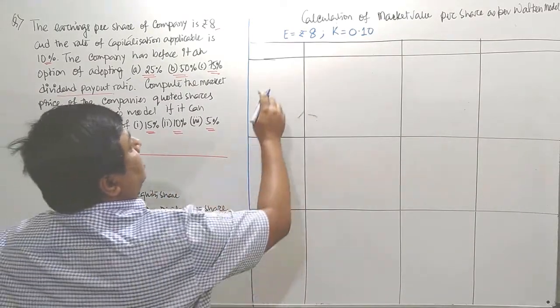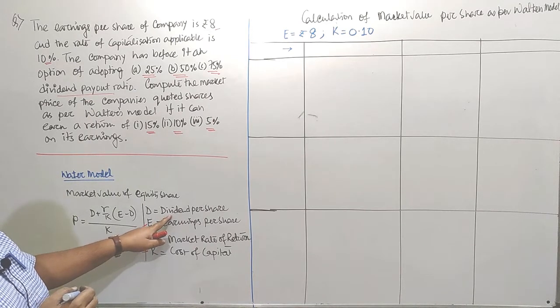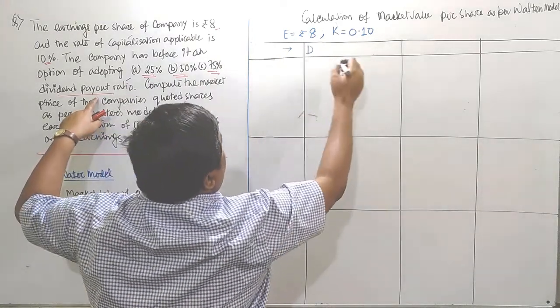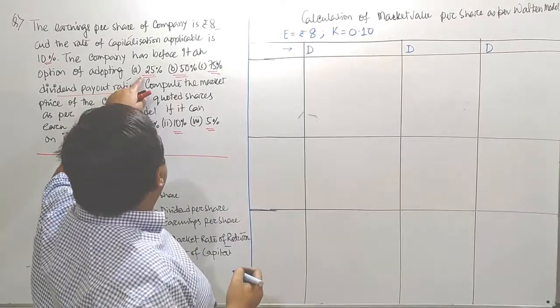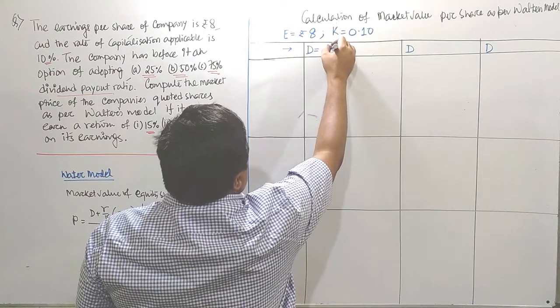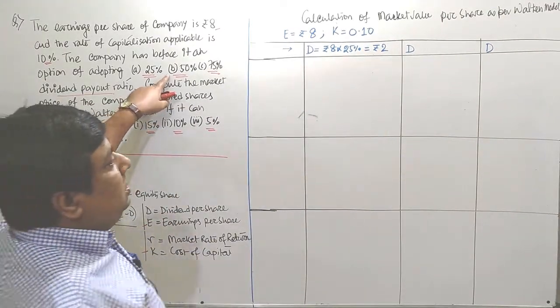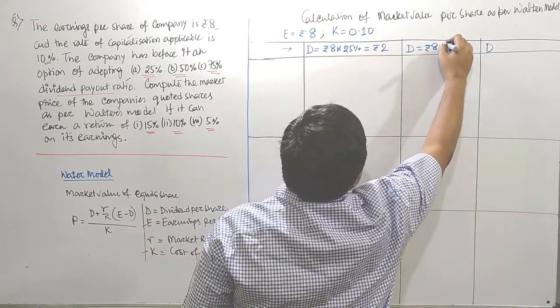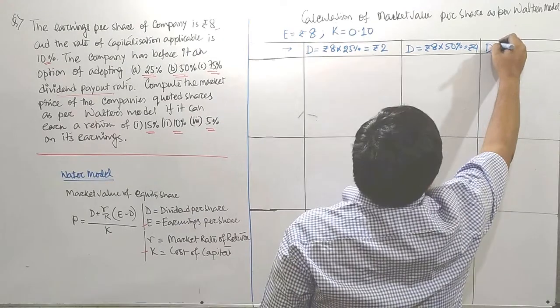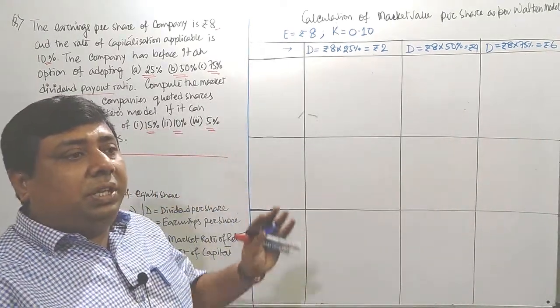For better styling, row-wise, we basically consider dividend per share. The options of D/P ratio we follow according to that row. Three specific D values: in first case, Rs 8 into 25% only, we are getting Rs 2. Second case, it is 50%, then Rs 8 into 50%, we are getting Rs 4. Third case, 75%, then Rs 8 into 75%, Rs 6.